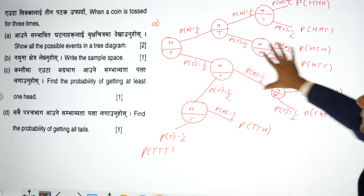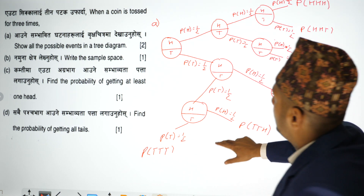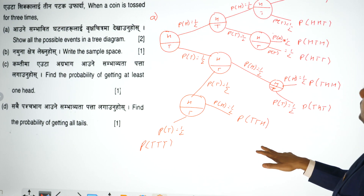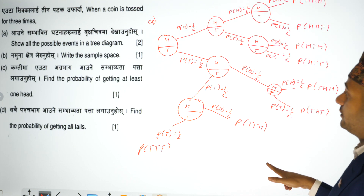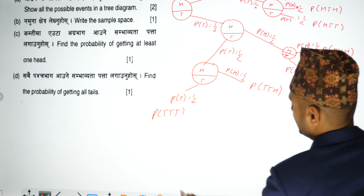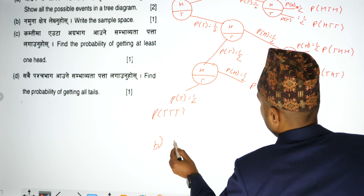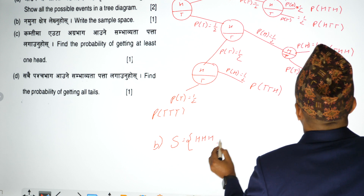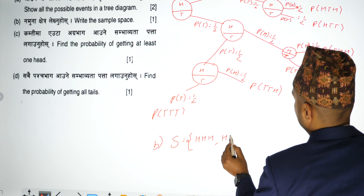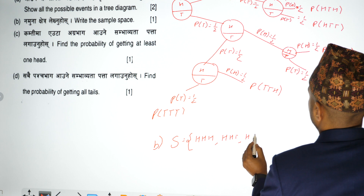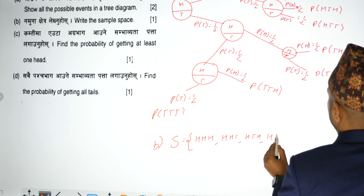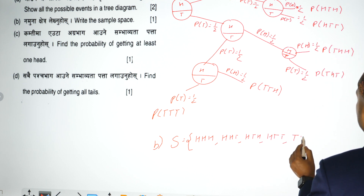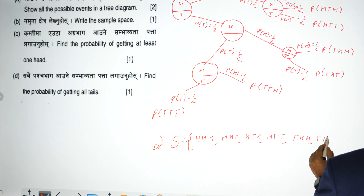If you have a sample space, you can see the sample space now. The sample space includes all outcomes such as T, T, T — giving 8 total outcomes.